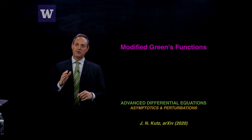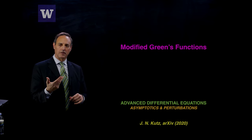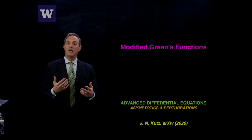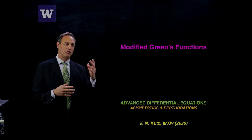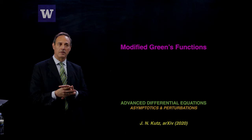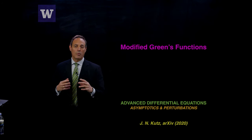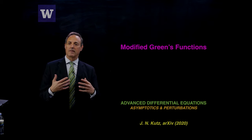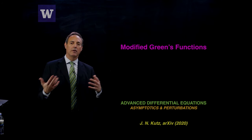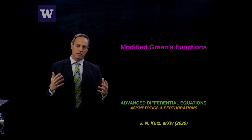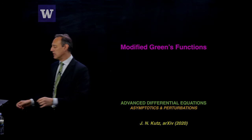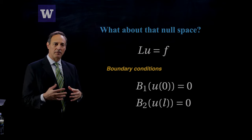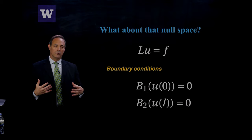We're going to move on to talk about some of the issues you often encounter with the Green's function and how you have to modify it in order to accommodate problems with your null space. If you have operators that have a null space, you're going to have to start thinking about using the modified Green's function formulation, because when we think about a linear operator with a right-hand side satisfying a solvability condition, that issue will still play a role in solving LU equals F using the Green's function.